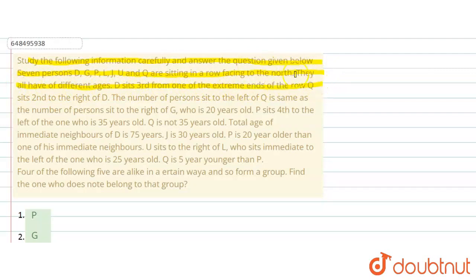D sits third from one of the extreme ends of the row. Q sits second to right of D. The number of persons sits to the left of Q is same as the number of persons sits to right of G. G who is 20 years old.